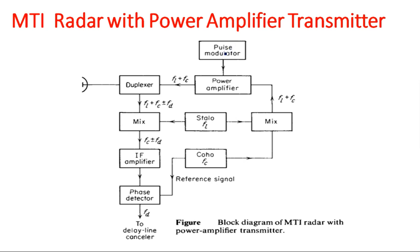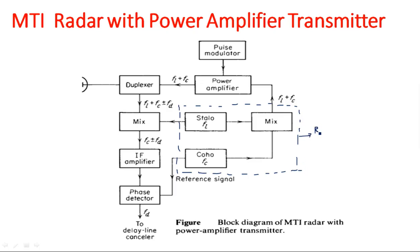This is the block diagram of MTI radar with the power amplifier transmitter. The block diagram looks somewhat complex but it is very easy if you understand it. By seeing the diagram alone we cannot easily identify which is the transmitting section and which is the receiving section, because there is a section called receiver-exciter which is in between the transmitting section and the receiving section. The combination of the transmitting section, receiving section, and this in-between section is known as the receiver-exciter.